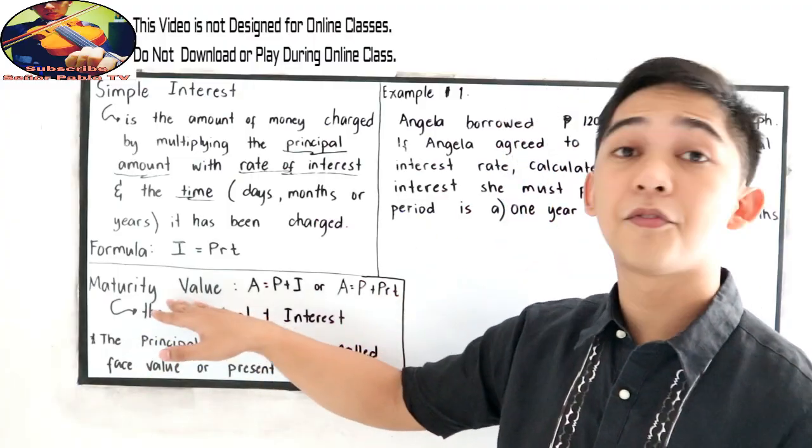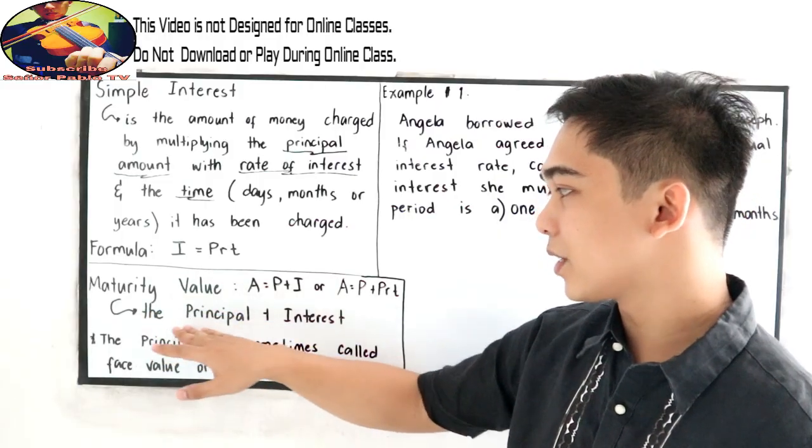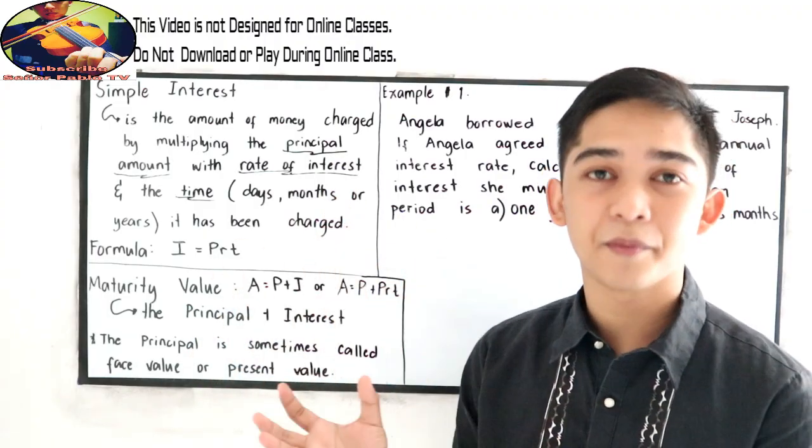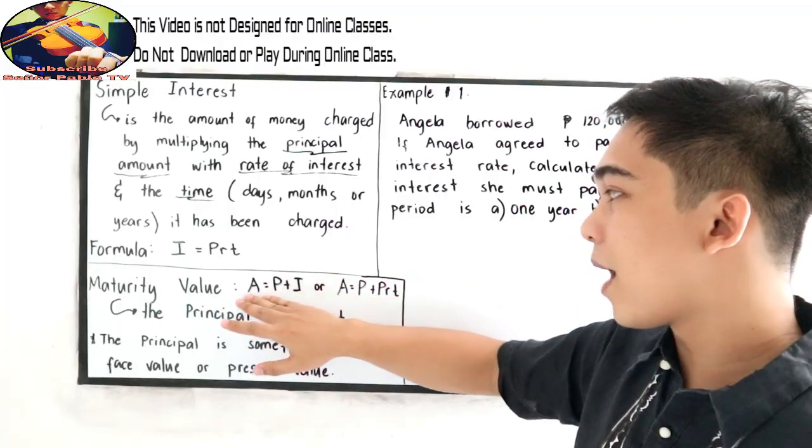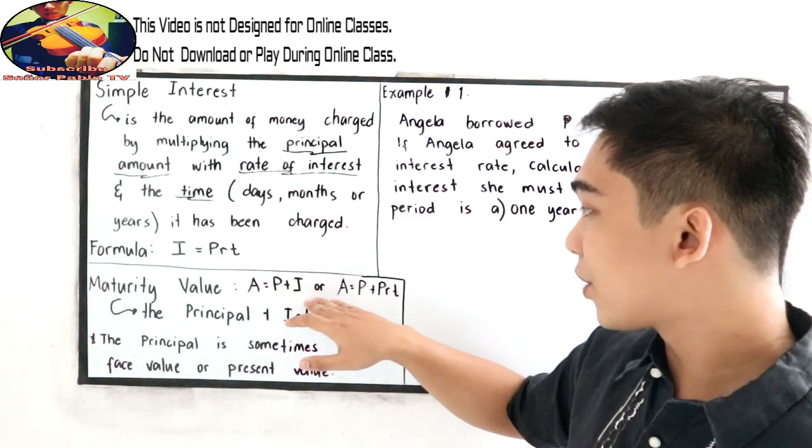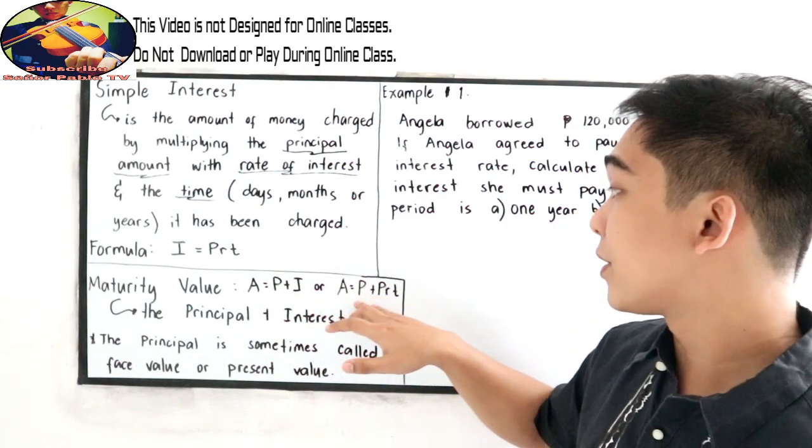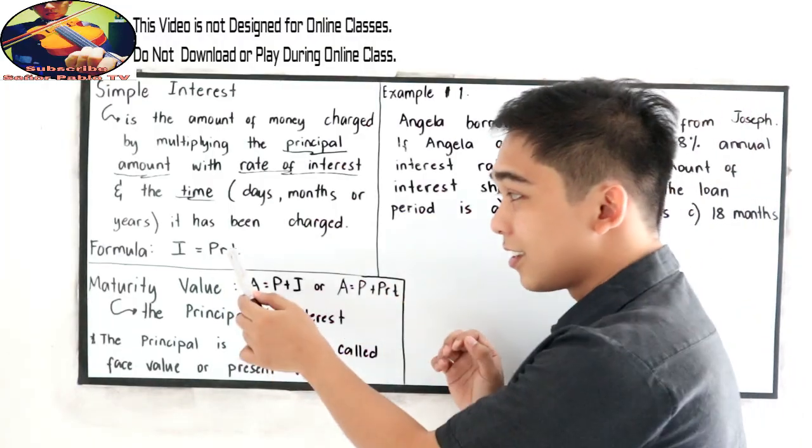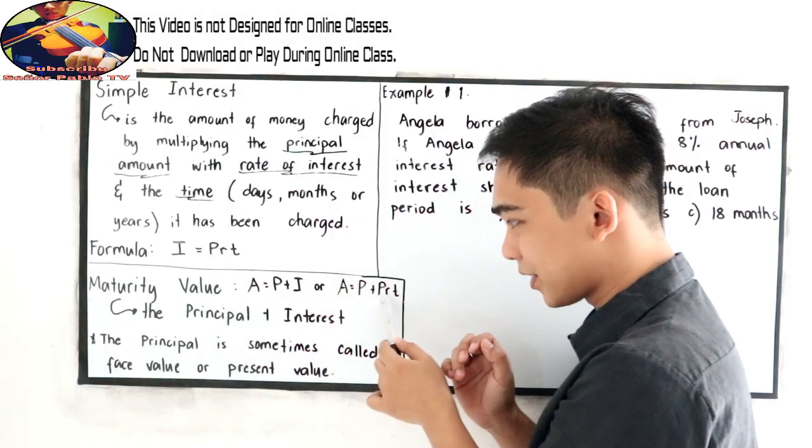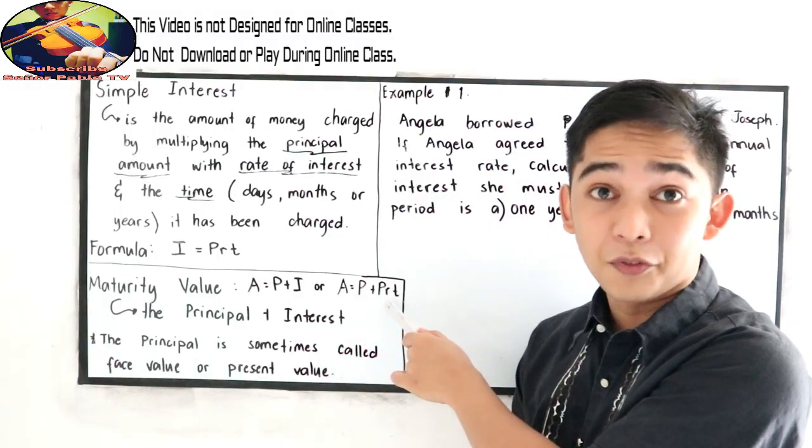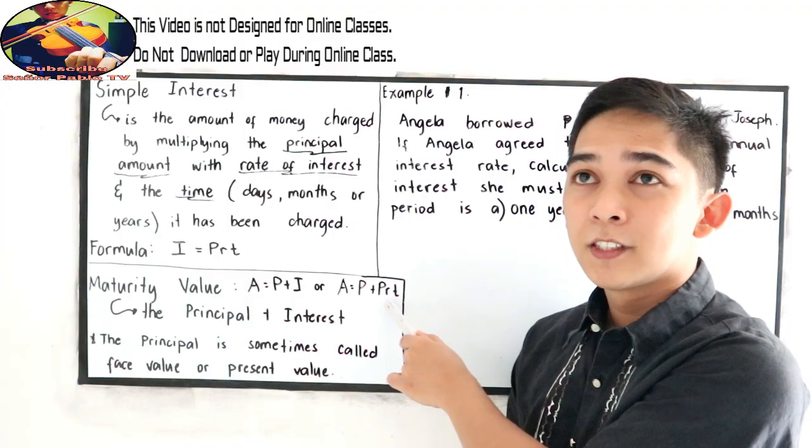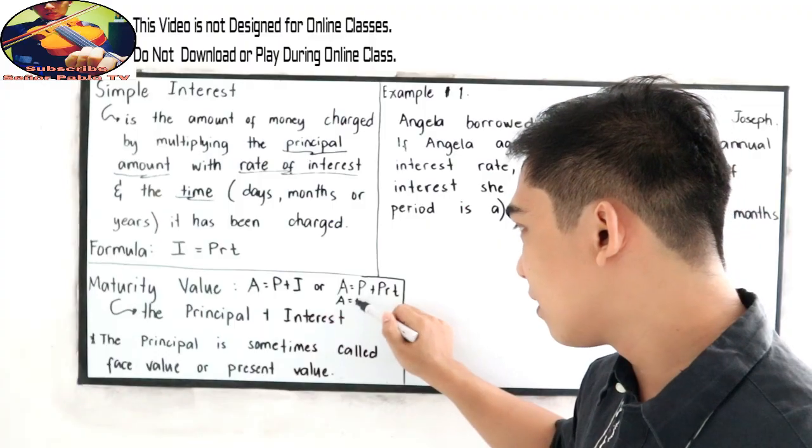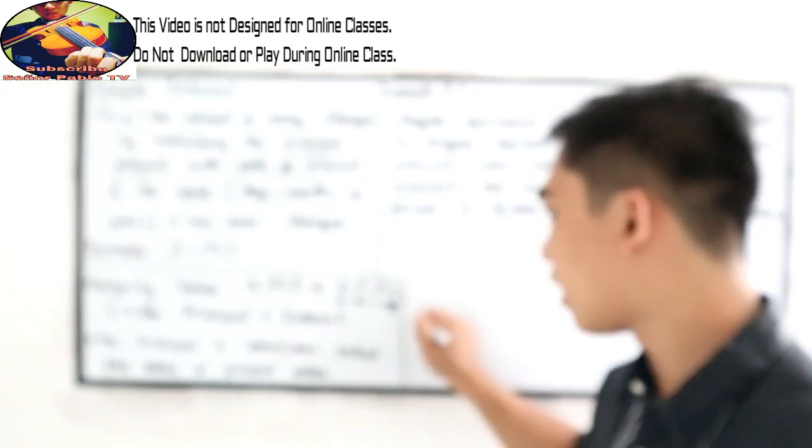You will also encounter the maturity value. So maturity value is the principal plus the interest. So this is the total amount of your money after a certain time. So we have the formula, the amount is equal to principal plus interest, or the amount is equal to principal plus our formula for interest, P, R, T. We just substitute. The I here is substituted from P, R, T. From here, we can derive another formula. If we're going to get the common factor, so amount is equal to, our common factor is P. So P, quantity, 1 plus R, T.